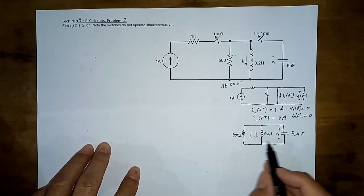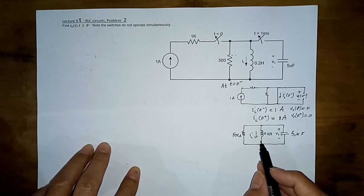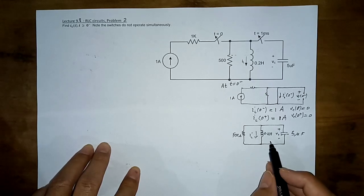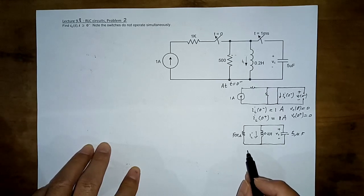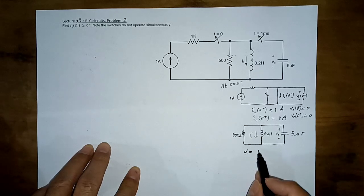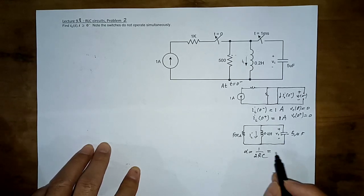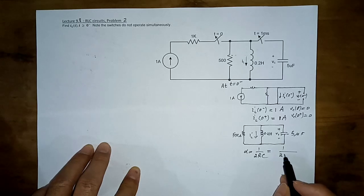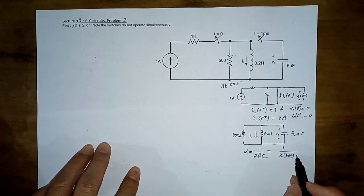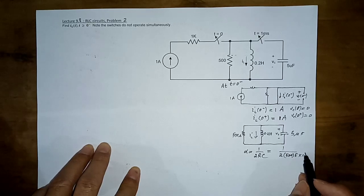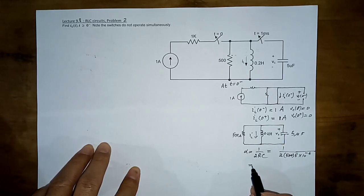We have a natural response circuit for a parallel RLC configuration with initial current of 1 ampere in the downward direction. For a parallel RLC, alpha equals 1 over 2RC. We compute alpha = 1 over (2 × 500 × 5×10⁻⁶).